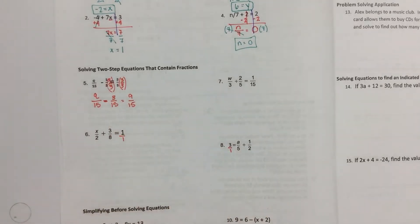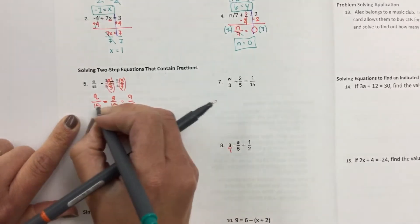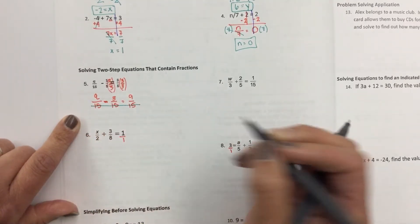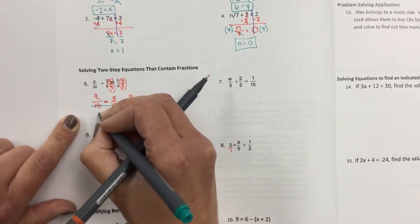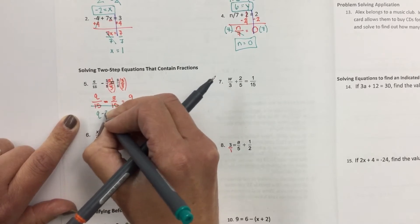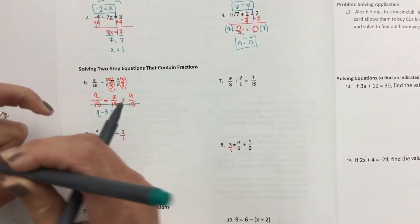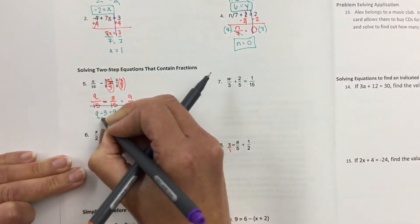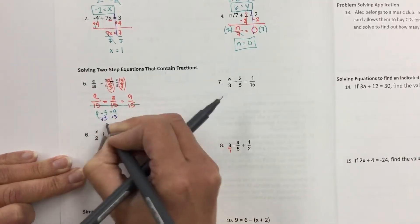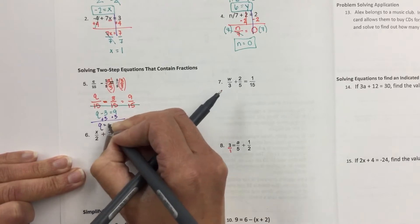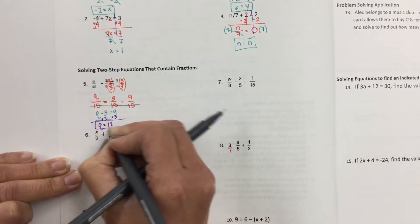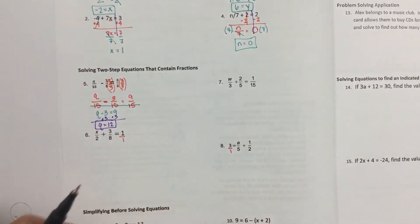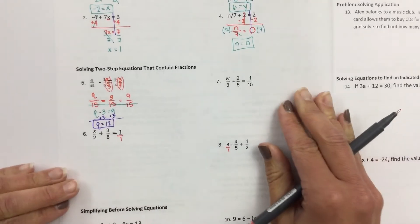So the really cool thing about this is once you get rid of them, you can forget about the bottom and it works out. So now my problem is Q minus 3 equals 9. But how do you get Q by itself? You add 3. And you get Q equals 12. So it makes your problem way easier. Once you found a common denominator, you really didn't have to deal with the actual fraction portion of it.